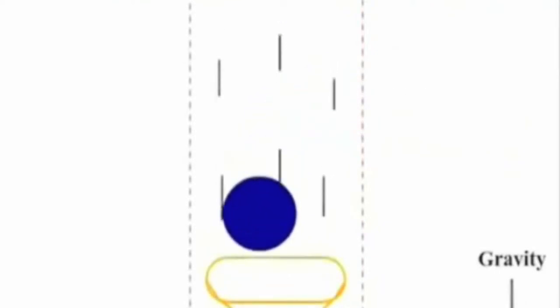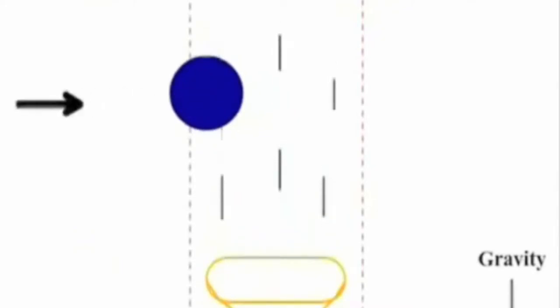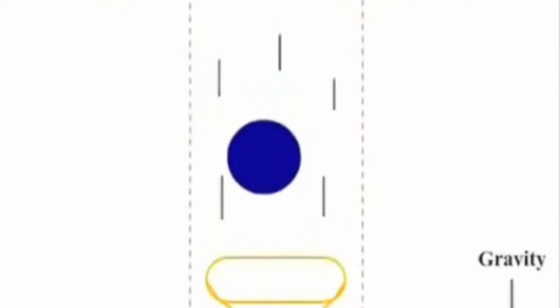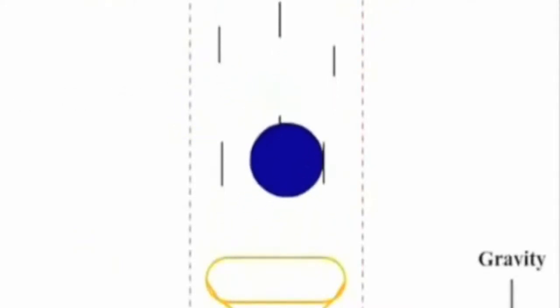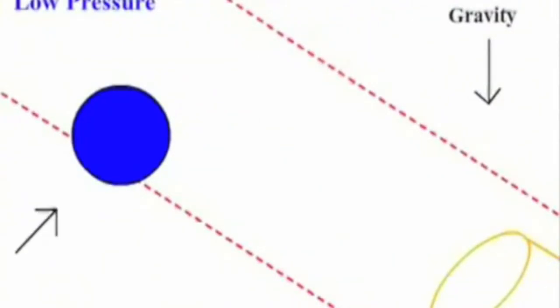The air is moving fastest right above the hair dryer, creating a zone of low pressure on either side of the fast-moving stream. This means that the ping pong ball is going to be encased inside low pressure zones. These pressure zones act as a barrier, keeping our ping pong ball in the zone of low pressure. When you tilt the hairdryer, the ball doesn't want to fall because it wants to stay inside the low pressure zones.